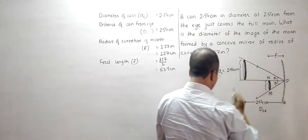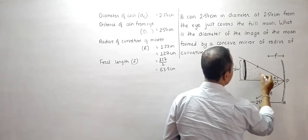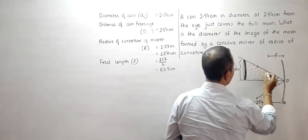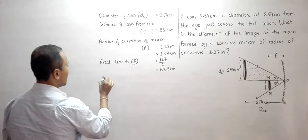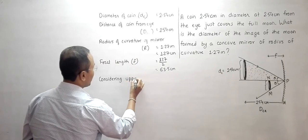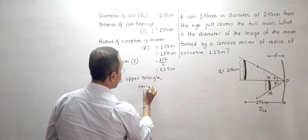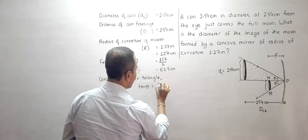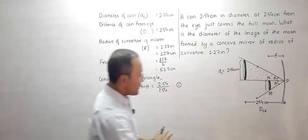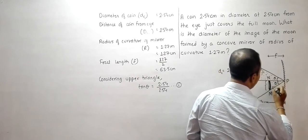Looking at the upper triangle in the diagram, we have tan θ = 2.54 / 254. This is equation number 1.